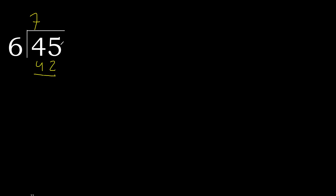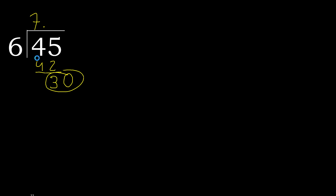45 minus 42 is 3. There is no next digit, so we complete with a decimal point and add a 0. Now we have 30. 6 multiplied by 5 is 30, which is not greater. 30 minus 30 is 0, therefore we are finished. The answer is 7.5.